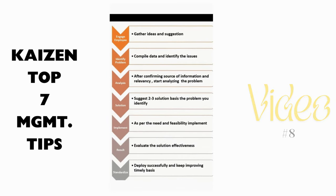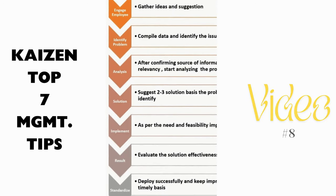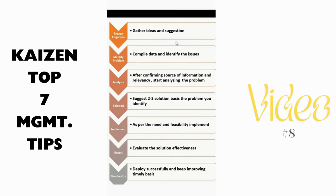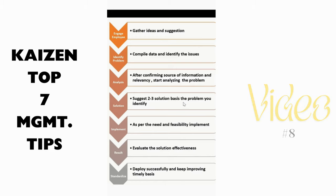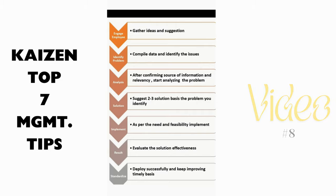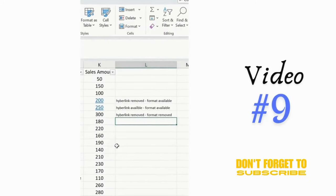How to use Kaizen in your daily work activity — at the time of quality or production. Step one: engage employees, gather ideas and suggestions. Step two: identify the problem, compile the data, and identify the issue. Step three: analysis — ensure you do analysis on the identified data set and check the relevancy and truth of the data source. Step four: suggest at least two to three solutions. Step five: implement as per need and feasibility. Step six: evaluate solution effectiveness. Step seven: standardization — continuous improvement cycle — deploy successfully and keep improving on a timely basis.